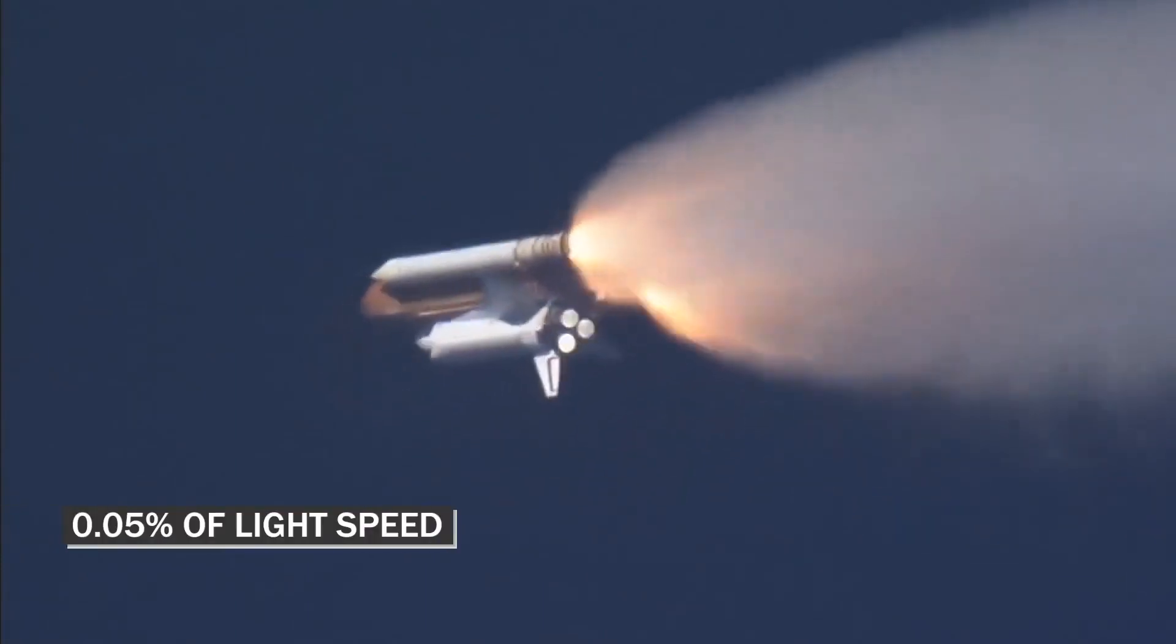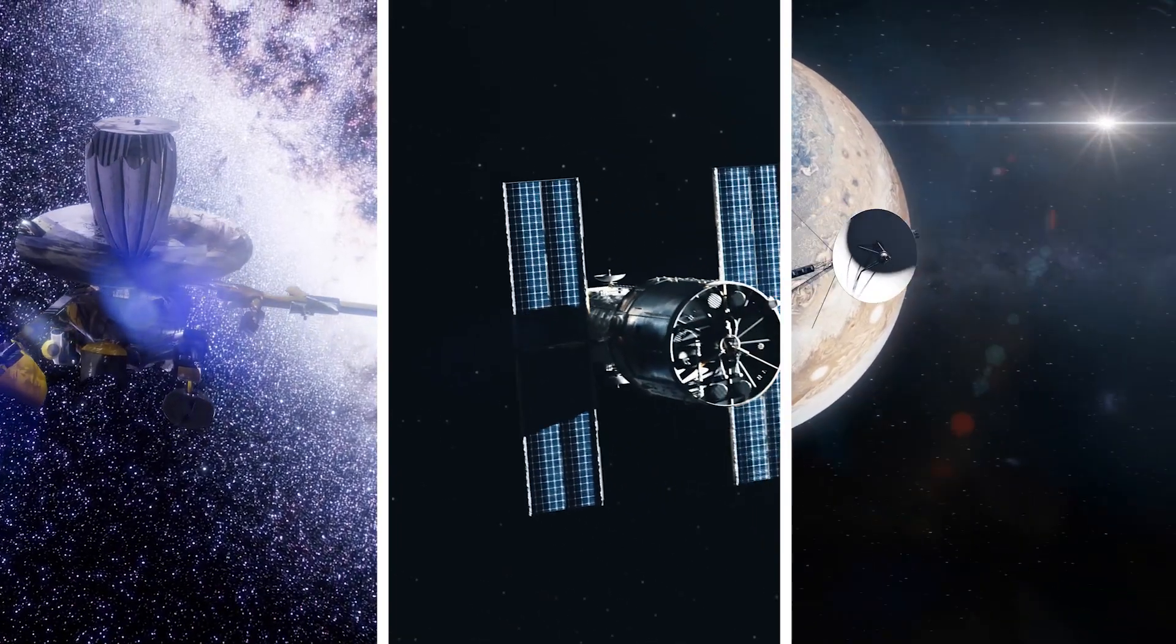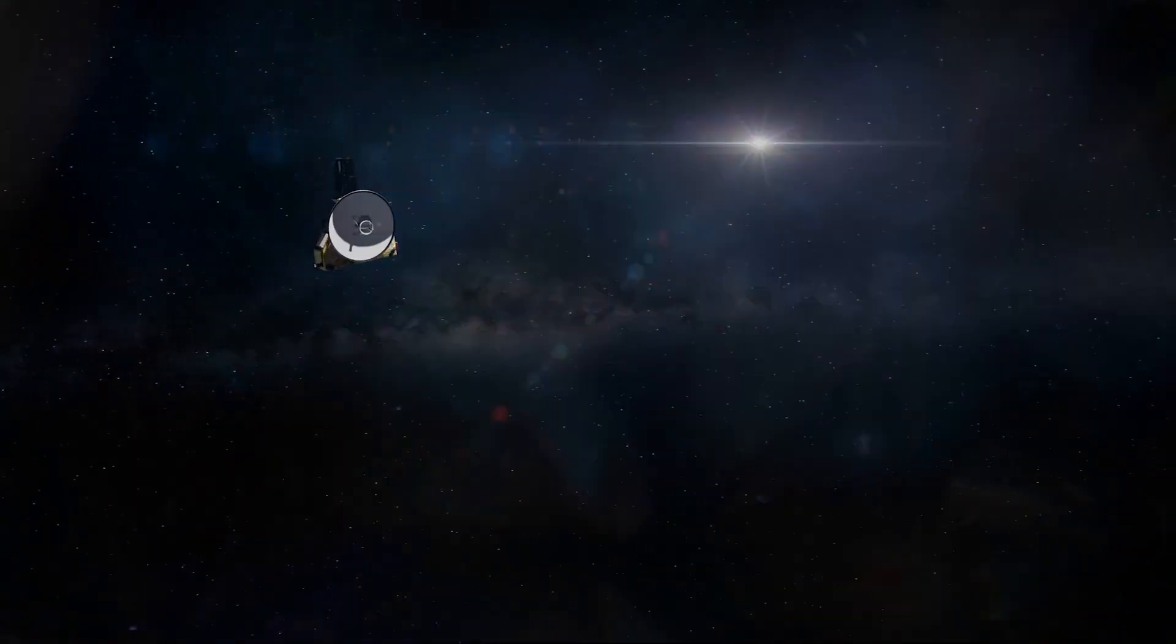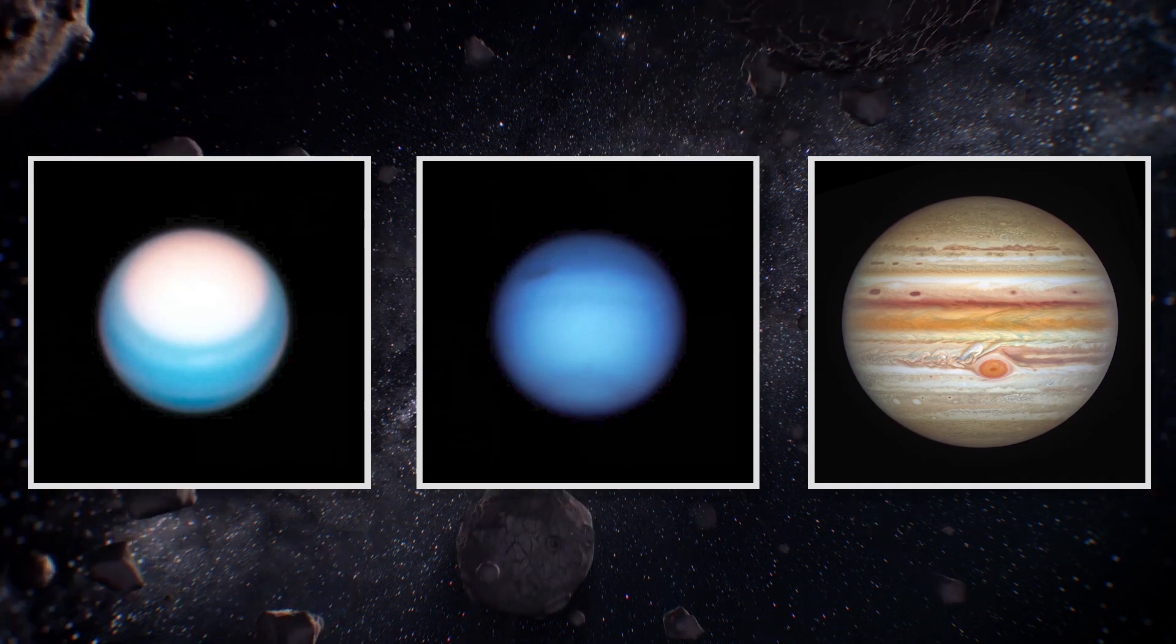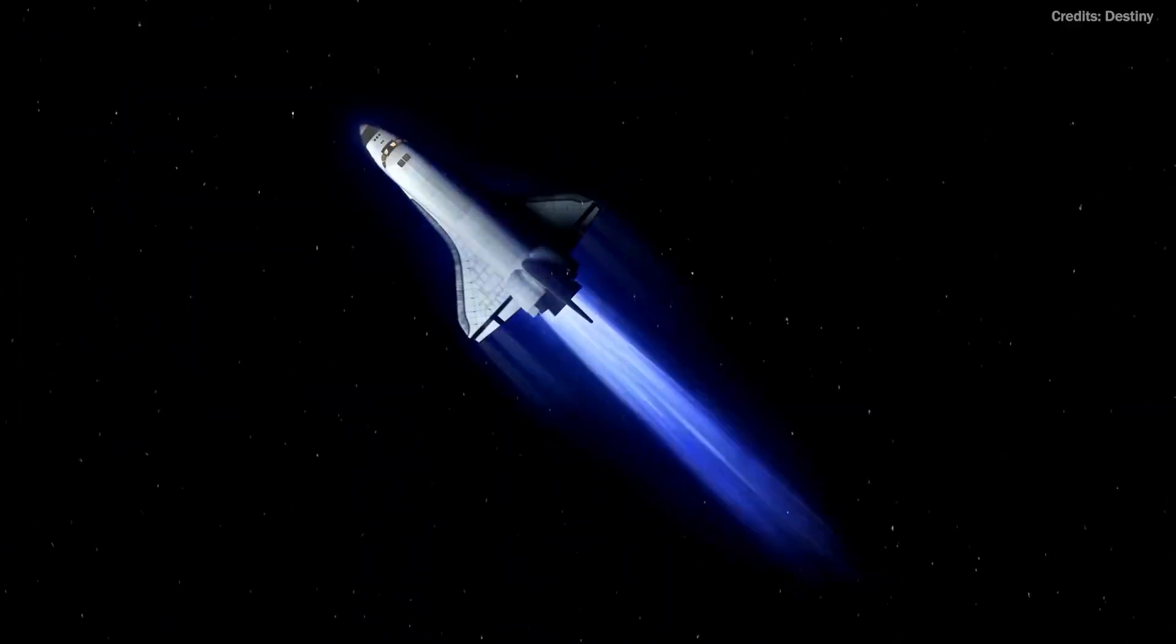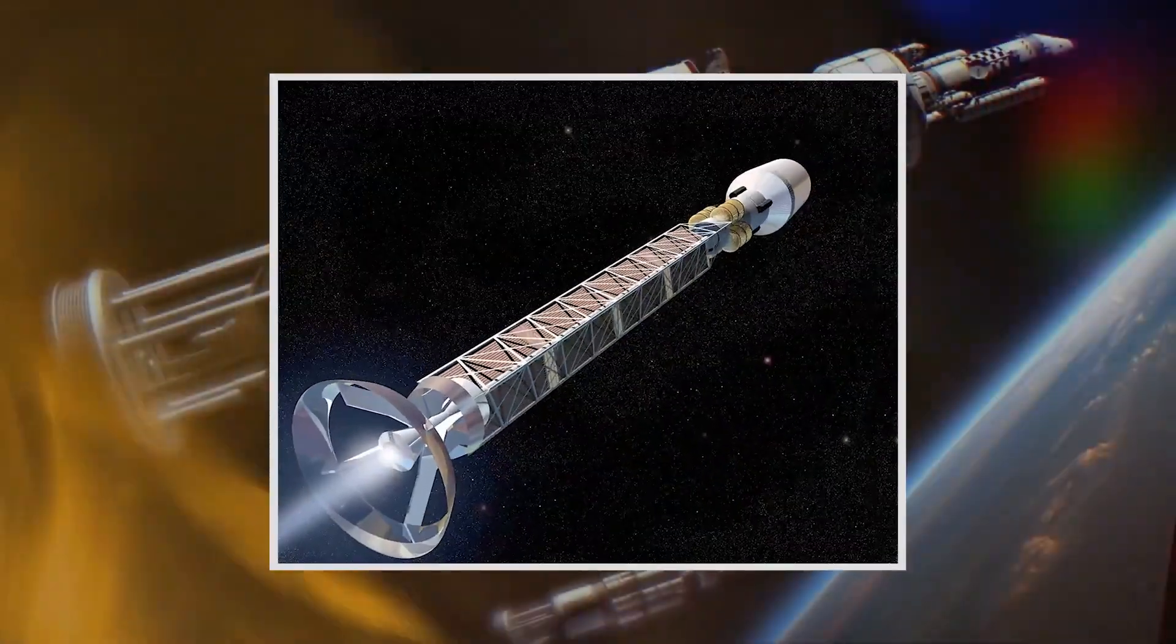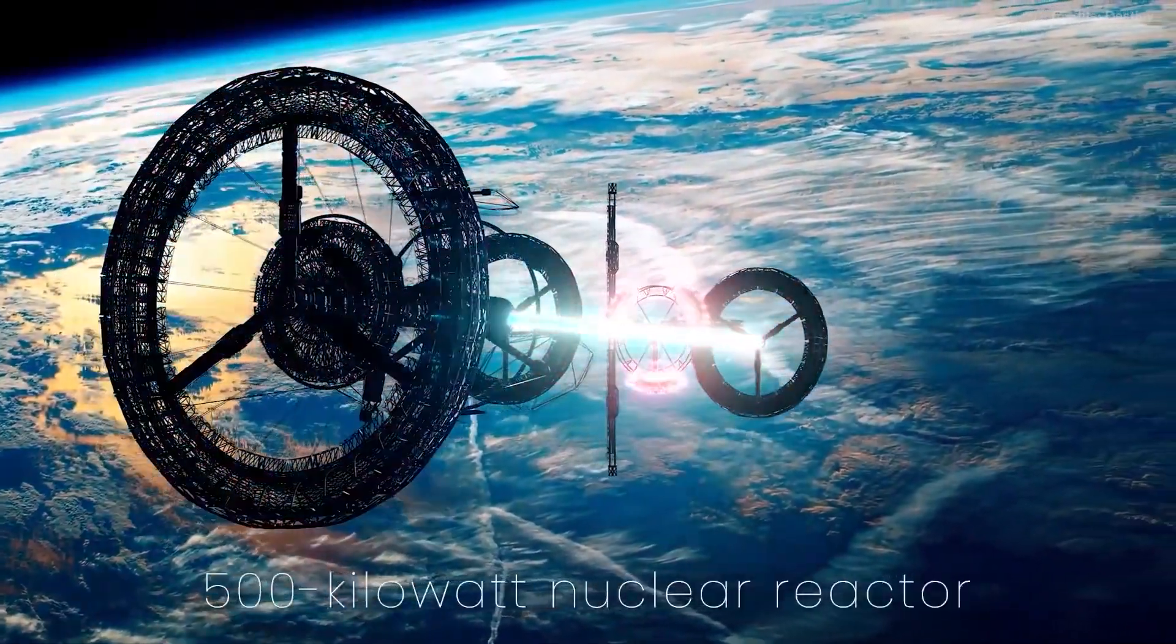In the past, NASA has concentrated its efforts on developing spacecraft that can travel at high speeds within our solar system, such as the Parker Solar Probe and the New Horizons spacecraft, which also achieved high speeds by utilizing gravity assistance from planets. NASA's research has also been focused on developing propulsion technologies that can allow spacecraft to travel faster and farther than ever before, such as ion thrusters, solar sails, and antimatter propulsion systems. However, these technologies are still far from reaching the speed of light.